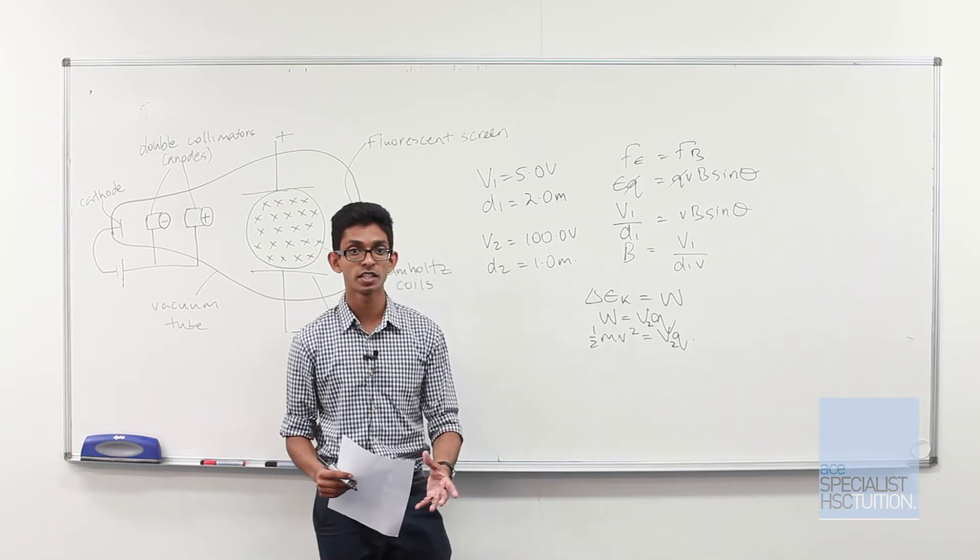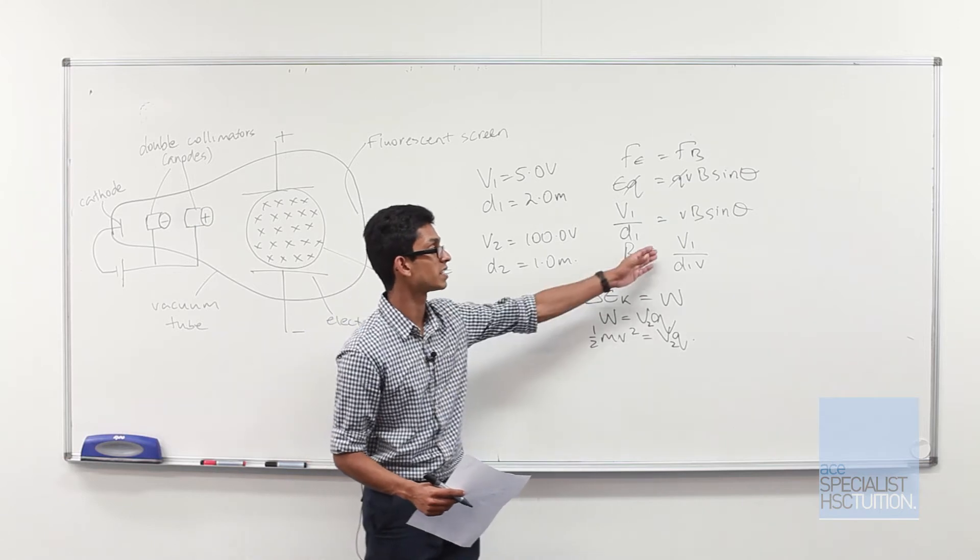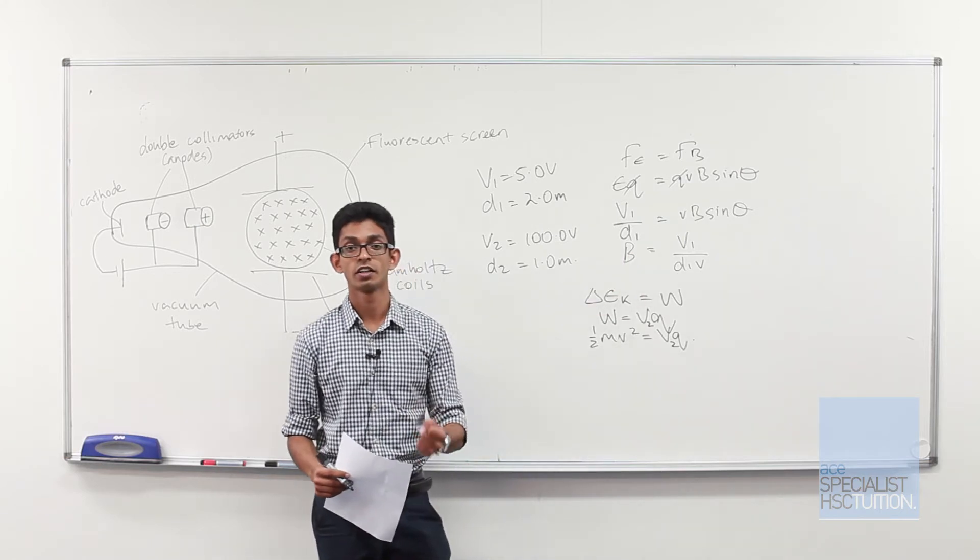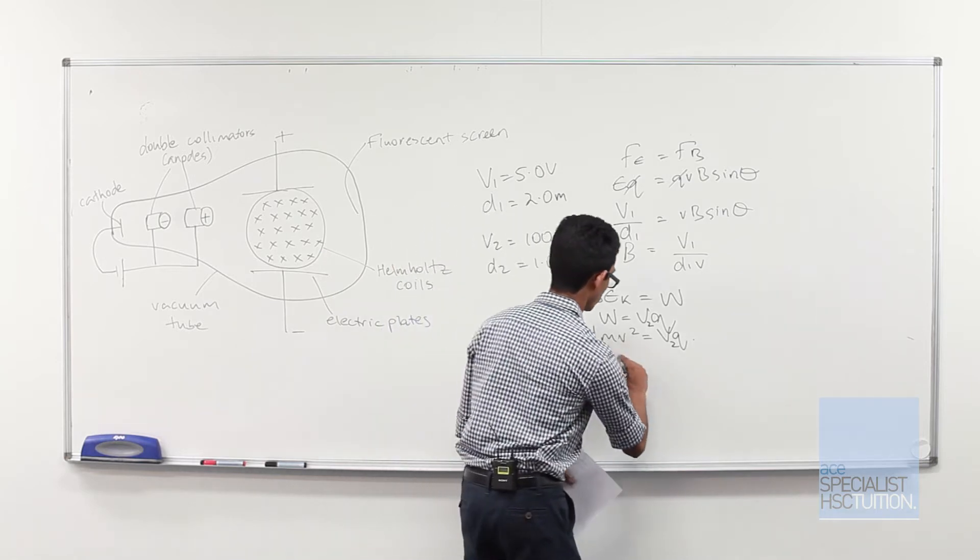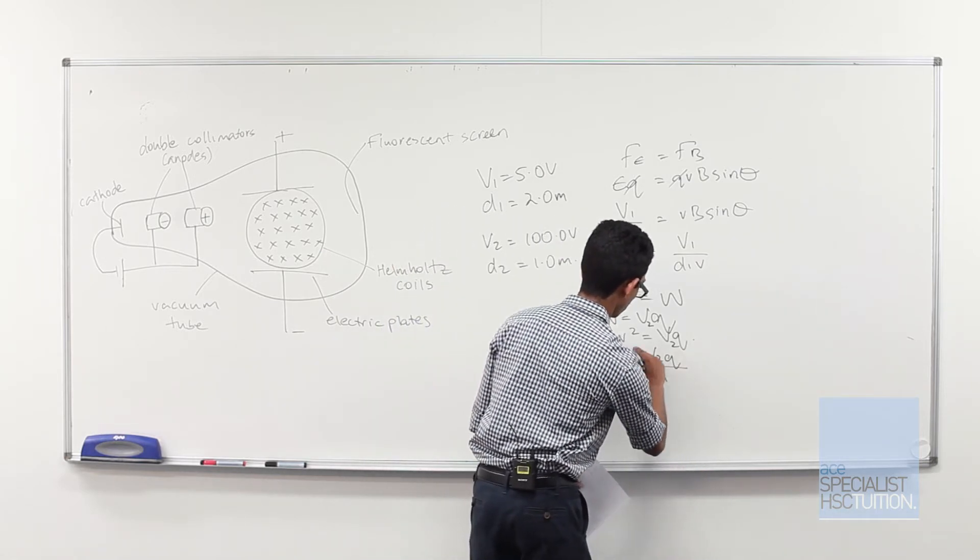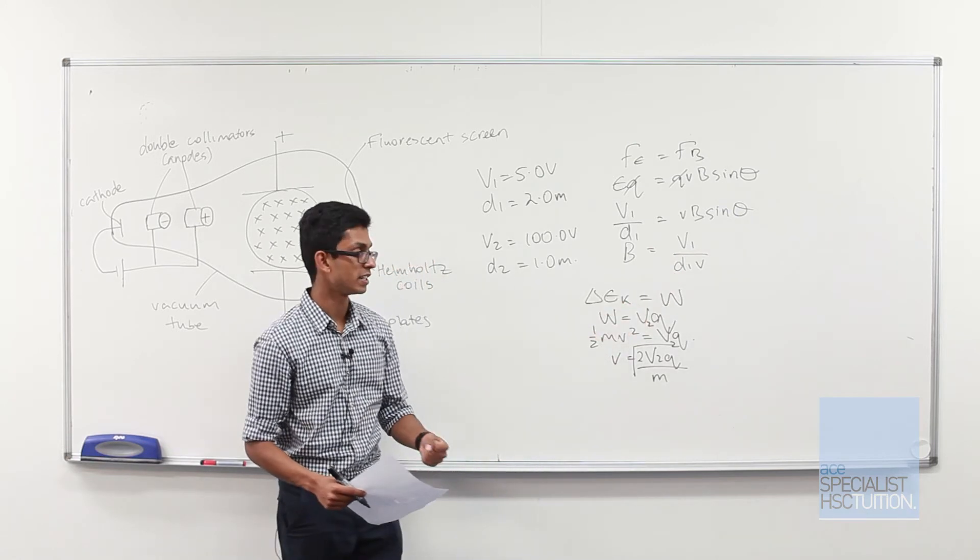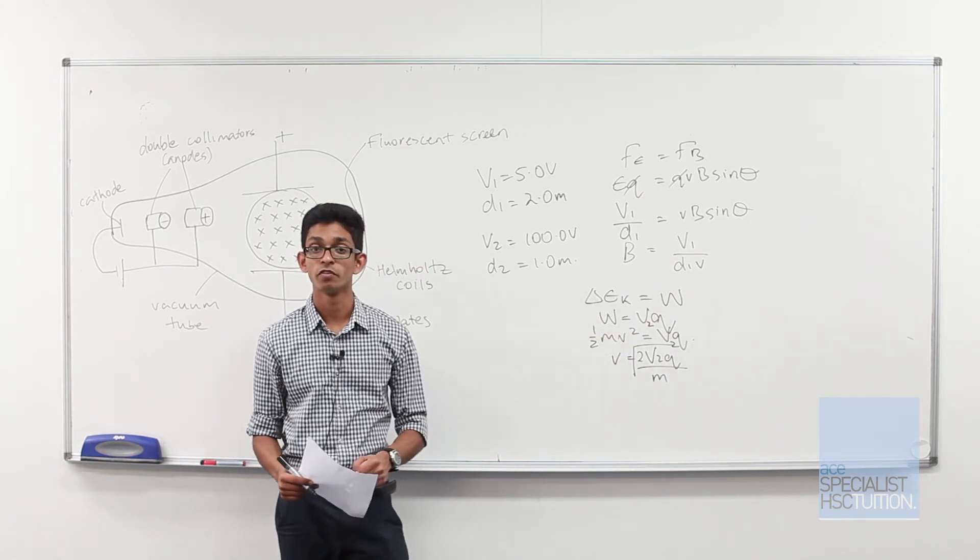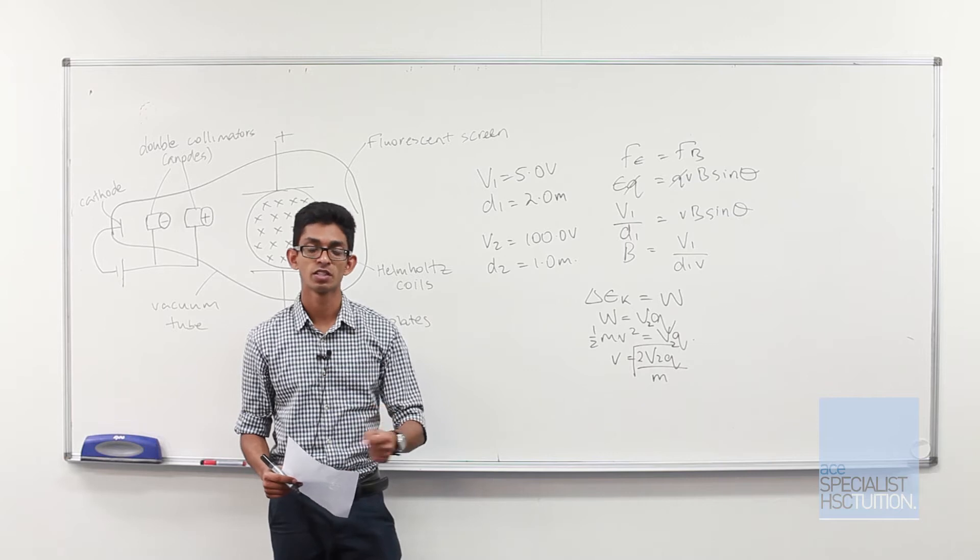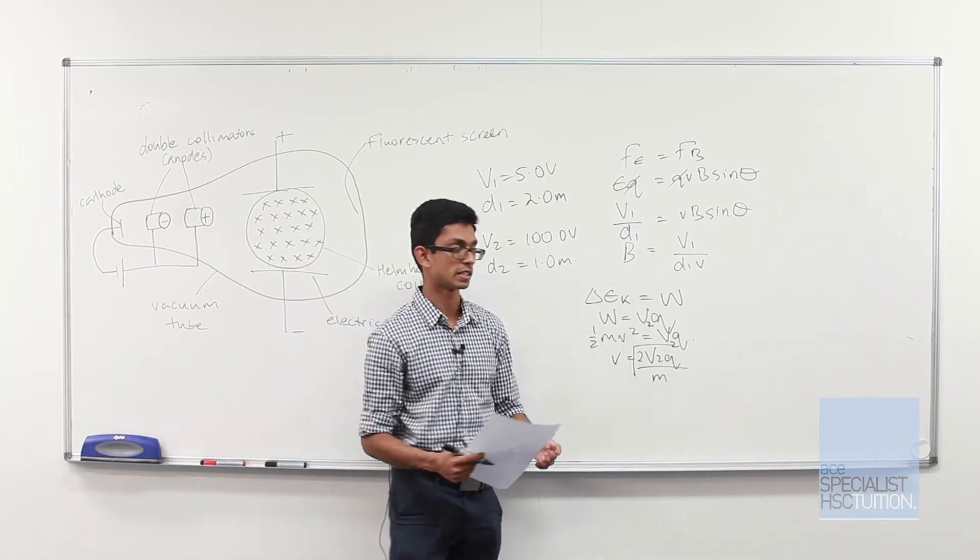Making V our subject, we can rearrange this and then sub that into that equation to determine the strength of our magnetic field. I'll now sub this formula into the formula for the strength of magnetic field, and we'll sub in our values to determine our final answer.